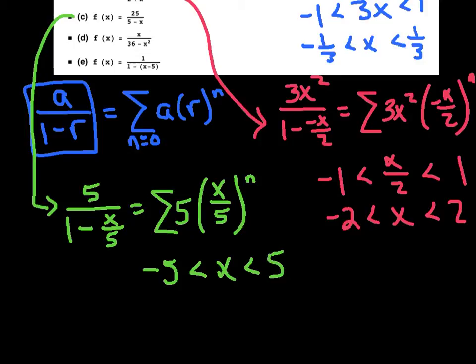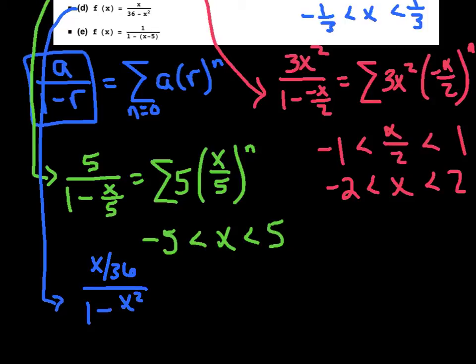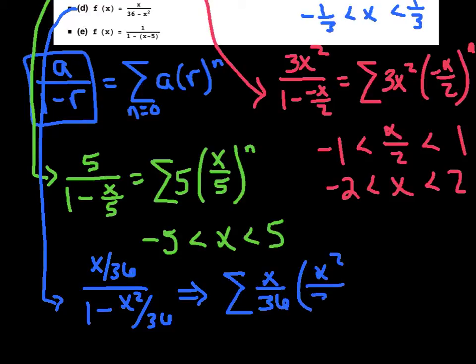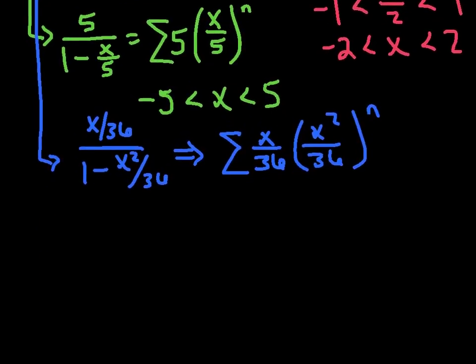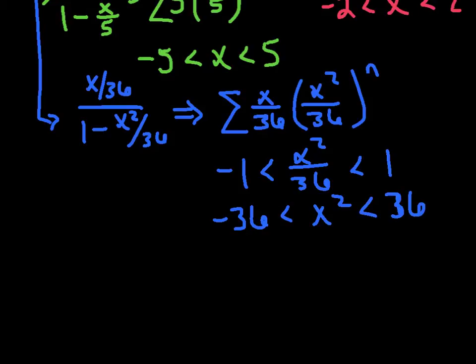All right, we're coming down the home stretch. For d here, I'm going to divide everything by 36 first. So on the top, I've got x over 36, 1 minus x squared over 36. Now we're fitting the mold. We've got a series. x over 36 is my a value. x squared over 36 is my r value, and that's raised to the nth power. Now, the interval of convergence is rather interesting. We're going to say that negative 1 falls on the left all the way to positive 1. We're going to multiply everything by 36 first of all. See, that 36 you thought was pretty ugly, and now you're finding out it's pretty friendly. Square root.